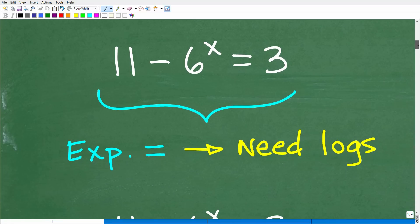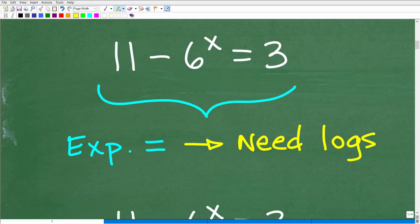Okay, so here we have 11 minus 6 to the x is equal to 3. So the first thing, when you're dealt with any kind of math equation, you need to identify what type of equation. There's all different sorts of equations in Algebra. And this particular equation, we're solving for the variable that's in the exponent location of this power. So this is quite different than x to the 6th power. This is a polynomial, a 6-degree polynomial. If we just switch the variable and the number around here. So here, because we're looking to solve for the variable that's in the exponent, this is an exponential equation.